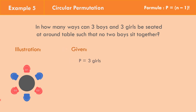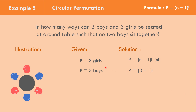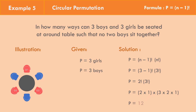The given is 3 girls, and the restriction is 3 boys with no 2 boys sitting together, so they alternate. The formula is P equals (n minus 1) factorial for the girls, times n factorial for the boys. Replacing the values: P equals (3 minus 1) factorial times 3 factorial, which is 2 factorial times 3 factorial. The equivalent of 2 factorial is 2 times 1, and 3 factorial is 3 times 2 times 1. Multiplying: 2 times 1 times 3 times 2 times 1 equals 12 ways.